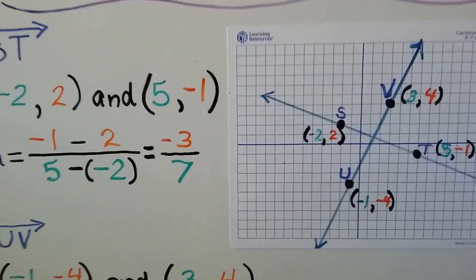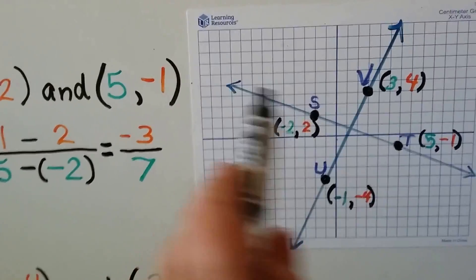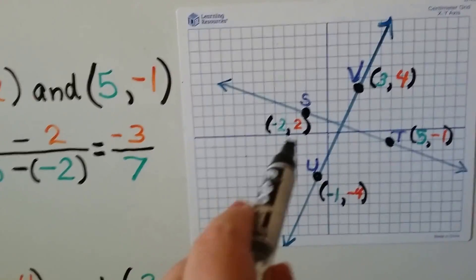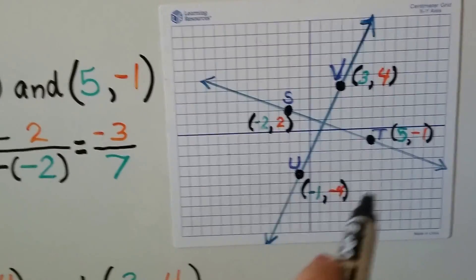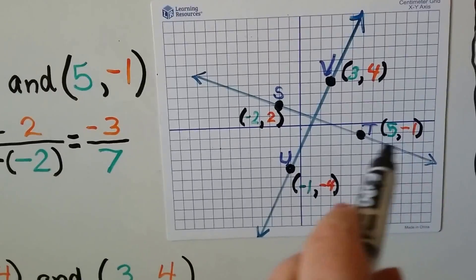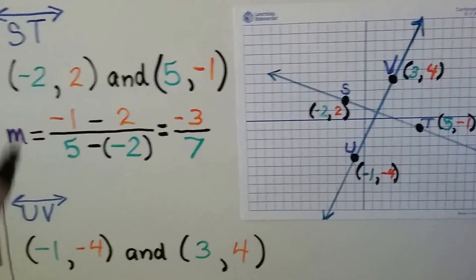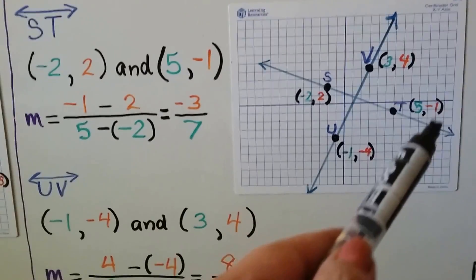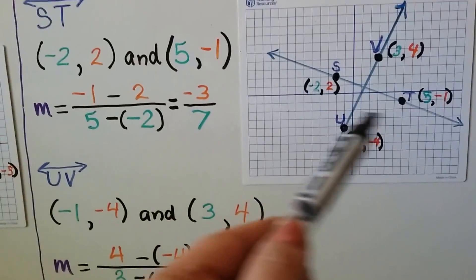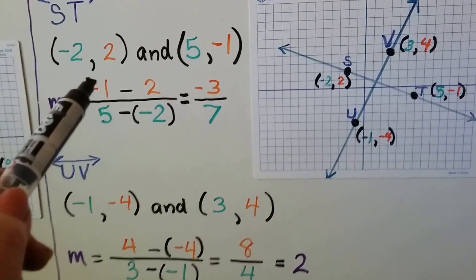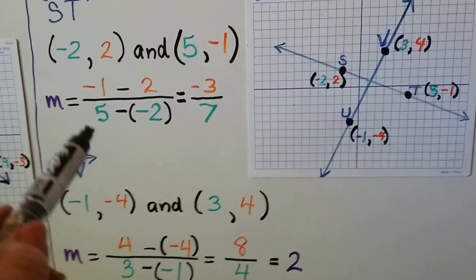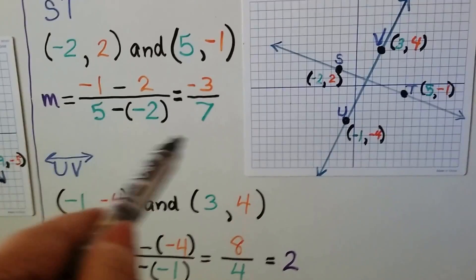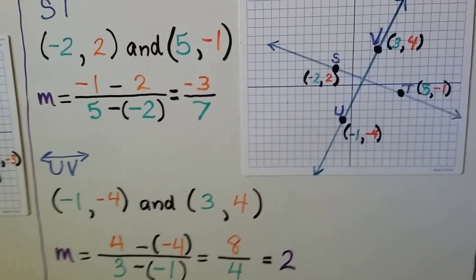Here we have line ST and we've got -2 for x and 2 for y for S. We have 5 and -1 for T. In the formula, that means we have -1 - 2 over 5 - (-2). -1 - 2 is -3. 5 minus a negative 2, we add the opposite, we get 7. We have -3/7.